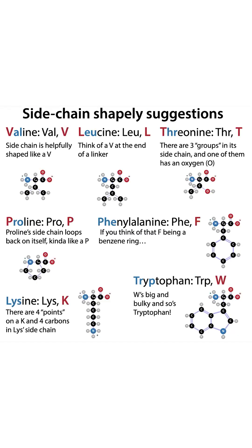Sometimes the name actually gives you hints about the shape. Valine is the most obvious — its side chain is shaped like a V, which is its one-letter abbreviation. Leucine: if you think of a V at the end of a linker, you get leucine. Threonine has three groups in the side chain, one of which has an oxygen — and there's your O. Proline's side chain loops back on itself, kind of like a P, and its abbreviation is P.